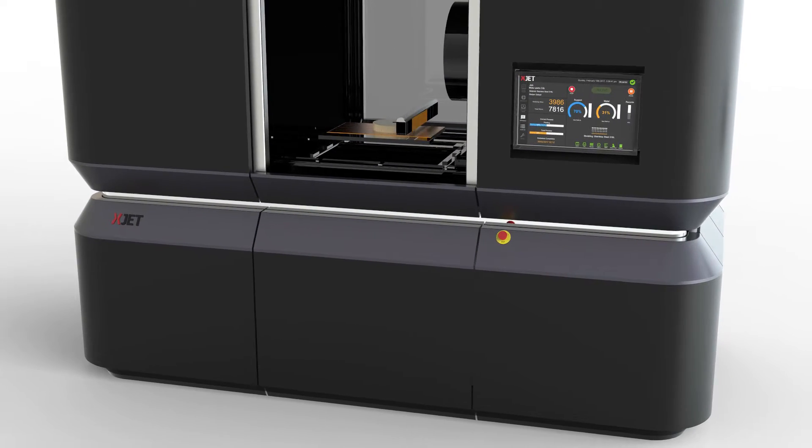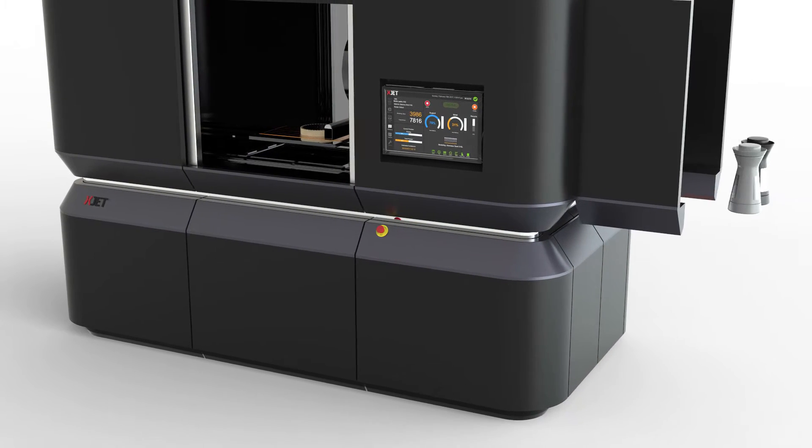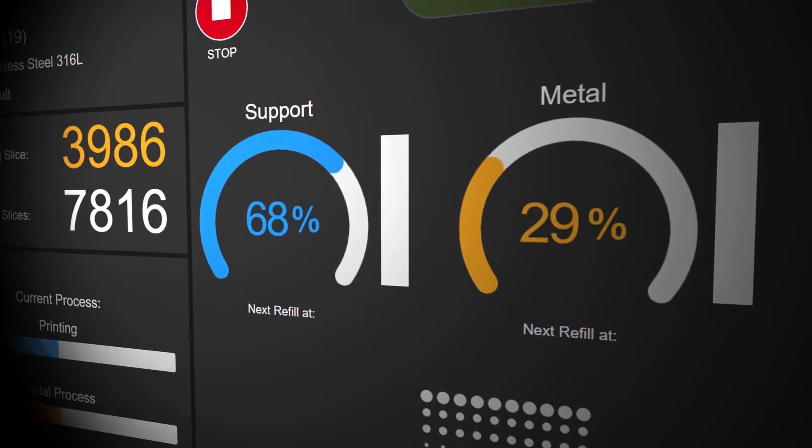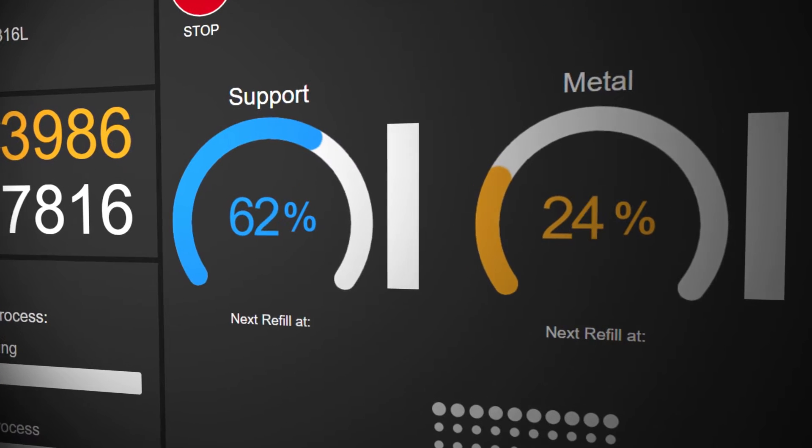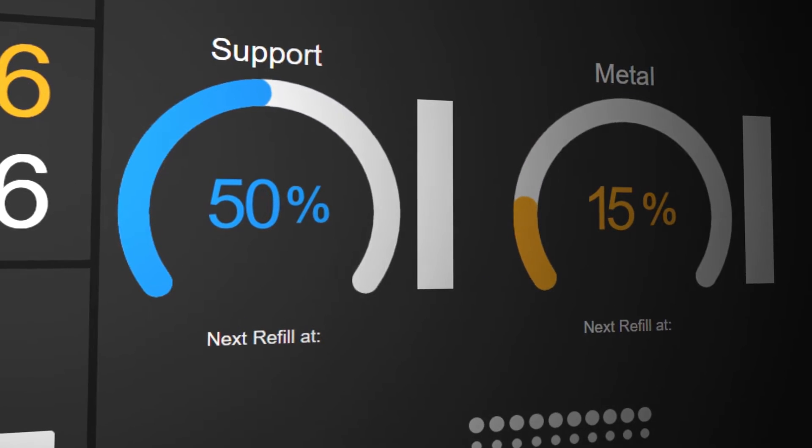The metal materials are packaged within specially adapted cartridges that are easily loaded by hand into the XJET system. Because there's no powder vat, XJET uses only the material required, saving space and eliminating the need for handling metal powders.